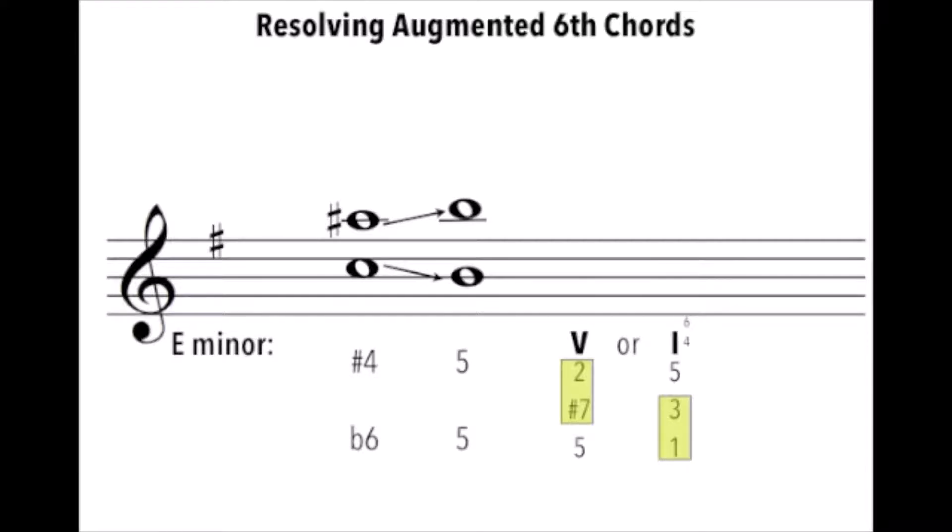In an Italian augmented sixth chord, we have two scale degree ones, we have two tonics. So let's move to a five chord. Well, they simply need to move by step, moving up and moving down. Let's not forget our leading tone, to raise our leading tone in a minor key. And then in the case of a one six four chord, the furthest one of the pitches moves is skipping a third and the other one maintains a common tone.